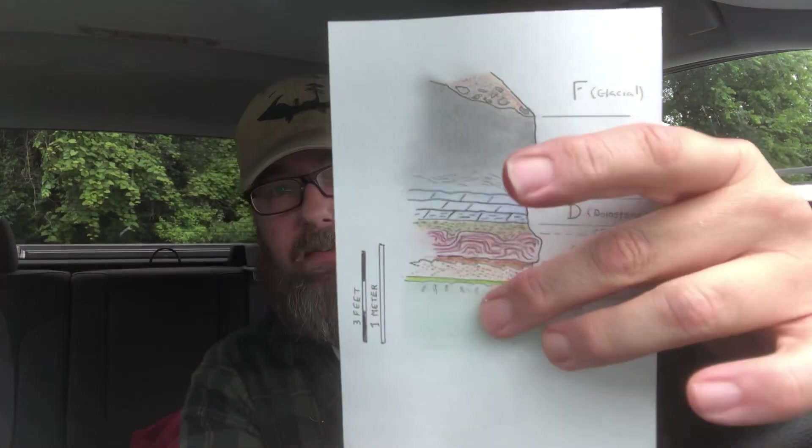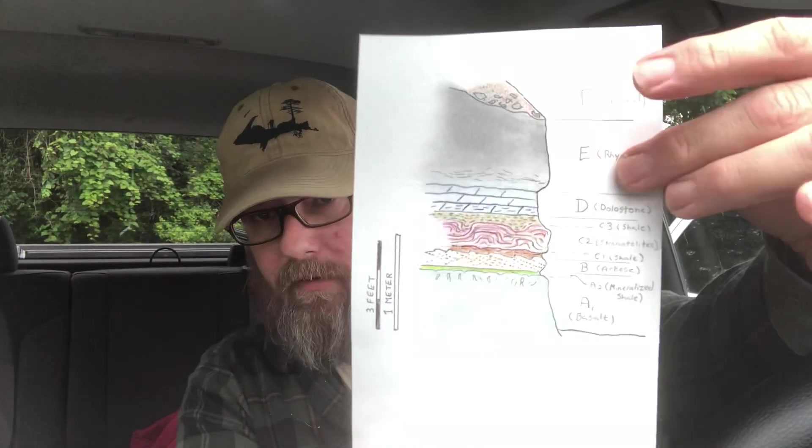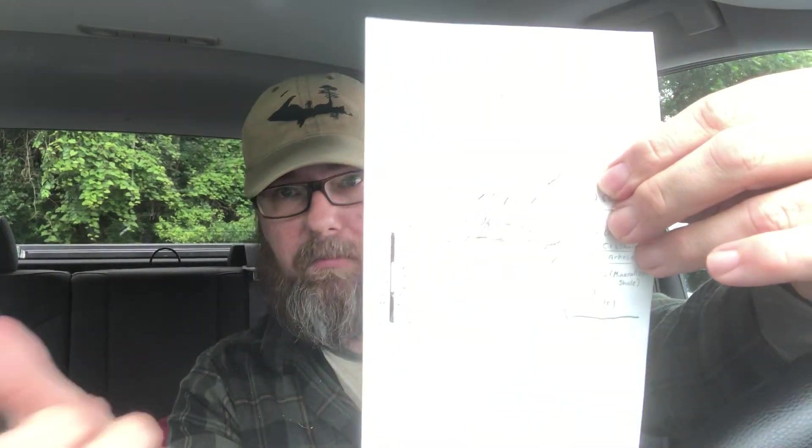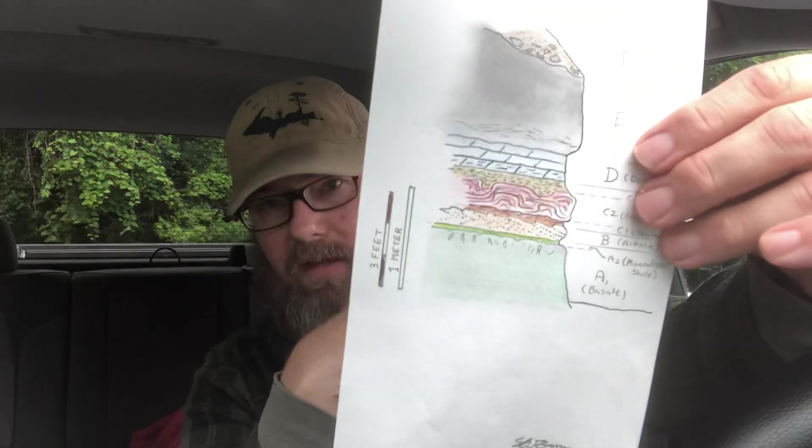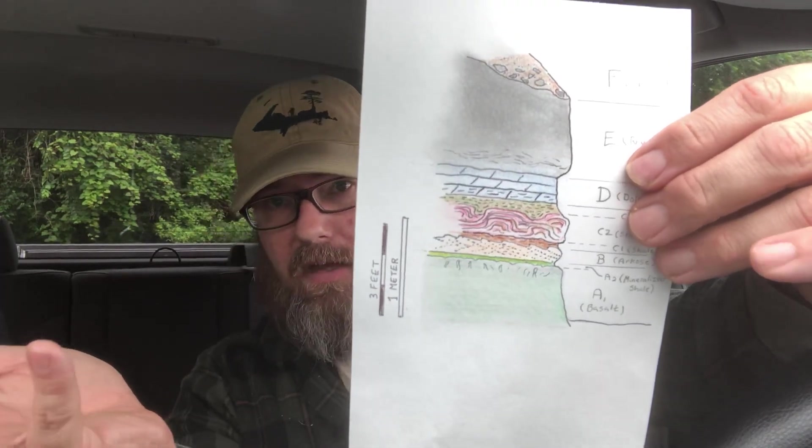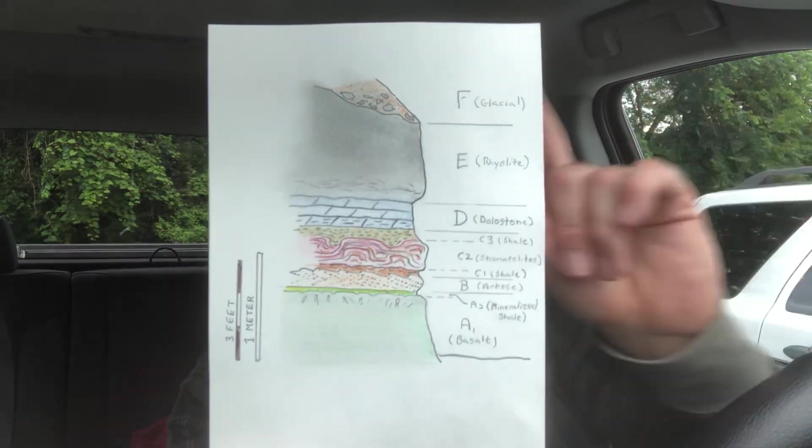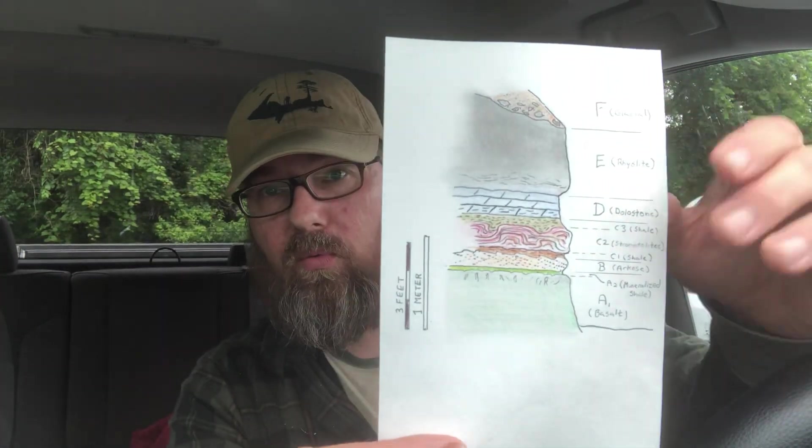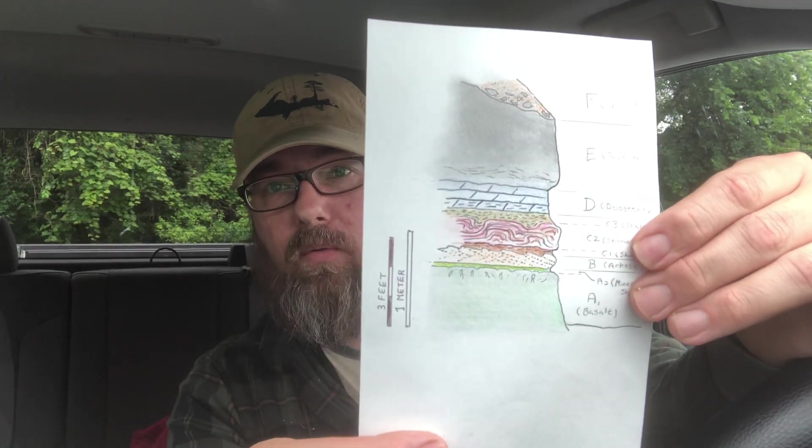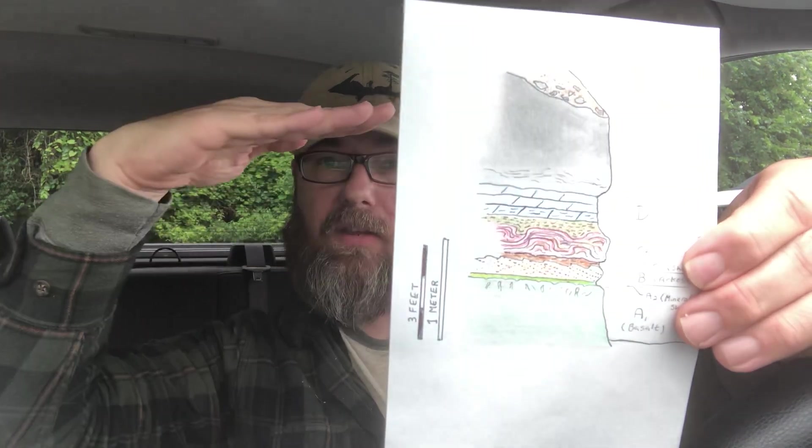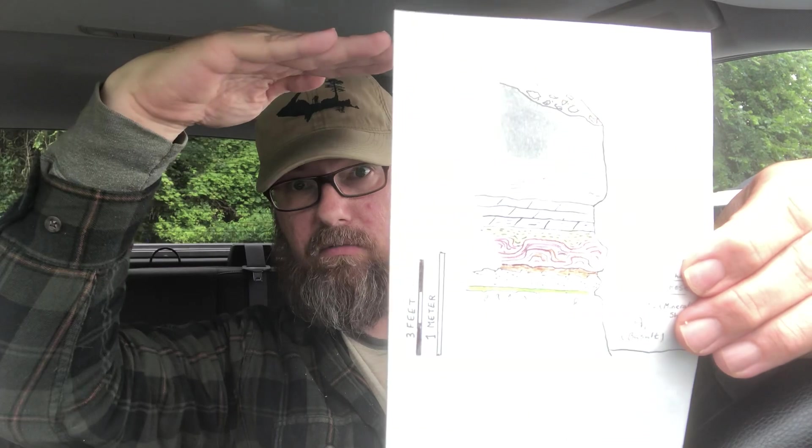When you date rocks, say this is undeformed. There's no evidence of metamorphism here at all. You don't have things like metamorphic minerals forming, there's no kyanites, there's no hydrothermal activity in the area that you've studied. So these rocks are not metamorphosed.